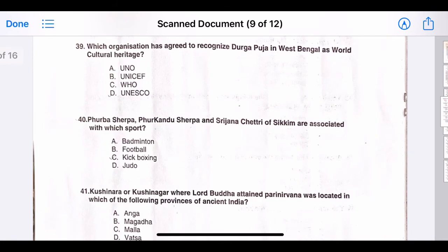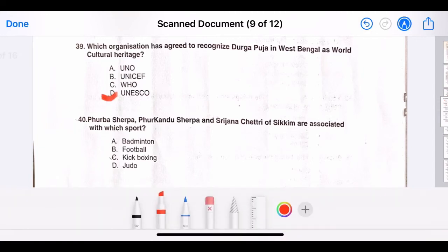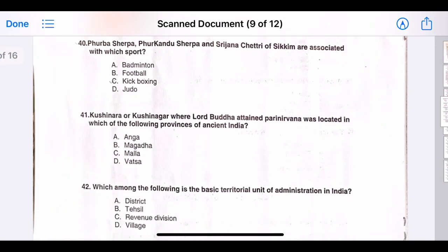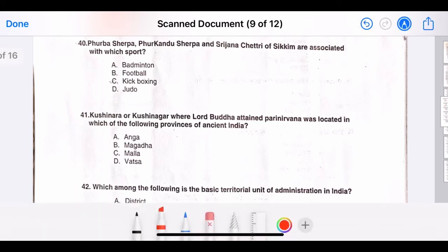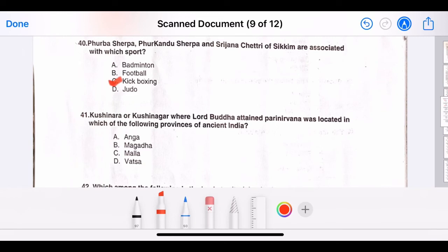Thirty-nine, which organization has agreed to recognize Durga Puja in West Bengal as World Cultural Heritage? The correct answer is option D, UNESCO. Forty, Furba Sherpa, Purkhandu Sherpa and Srijana Chetri of Sikkim are associated with which sport? The correct answer is option C, kickboxing.